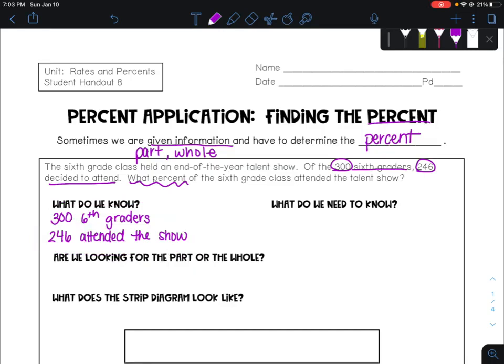...we have to decide which one of these is the part and which one is the whole. Since it's 300 sixth graders and some of them, 246 of them, attended the show, I know that the 300 is the total. So it's the whole, and the part, the ones that decided to attend, is the 246. And then over here, what do we need to know, just like the title of the lesson, we're looking for the percent, and specifically the percent that attended.